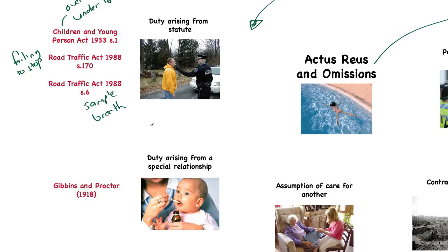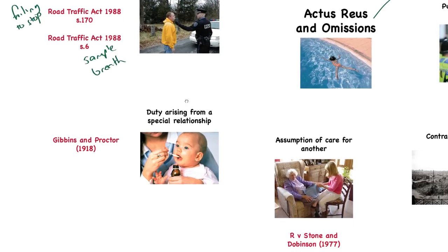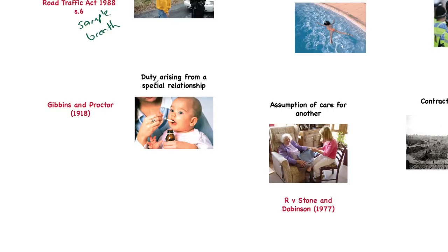Now let's look at derivative liability — liability in which a duty is constructed normally because of special positions. The first is a duty arising from a special relationship. Common law creates a duty on a parent to act for the welfare of their child, and if harm is caused to that child by a failure to act, they may be criminally liable for the resulting harm.